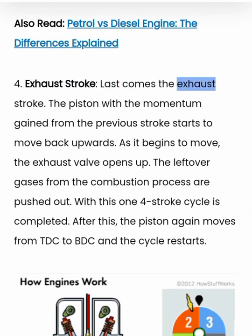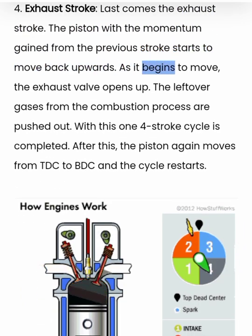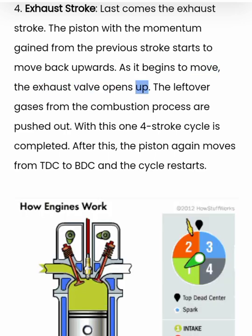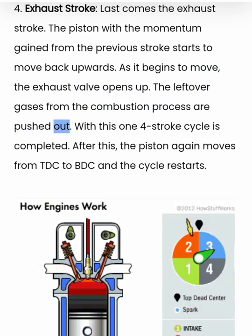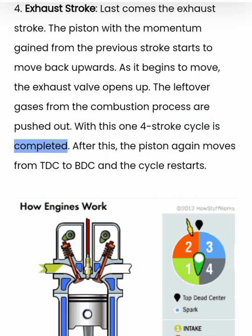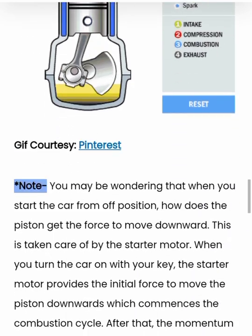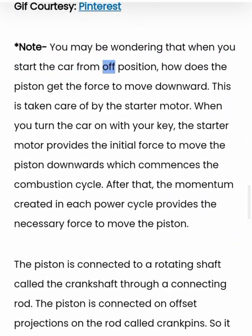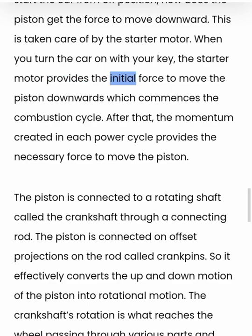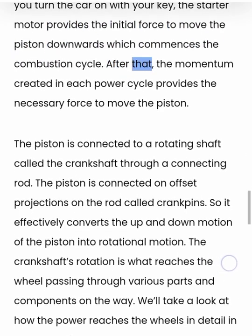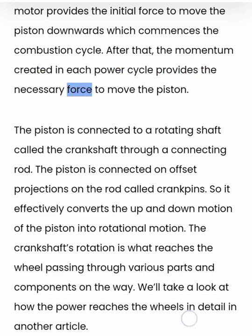Exhaust stroke: the piston, with the momentum gained from the previous stroke, starts to move back upwards. As it begins to move, the exhaust valve opens up. The leftover gases from the combustion process are pushed out. With this, one four-stroke cycle is completed. After this, the piston again moves from TDC to BDC and the cycle restarts. Note: when you start the car from the off position, the starter motor provides the initial force to move the piston downwards, which commences the combustion cycle. After that, the momentum created in each power cycle provides the necessary force to move the piston.